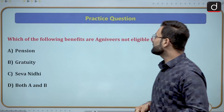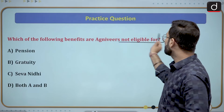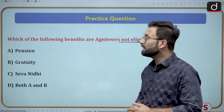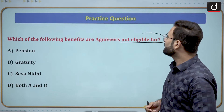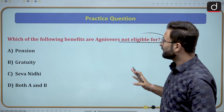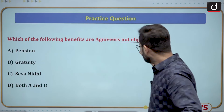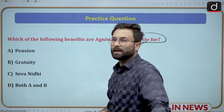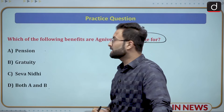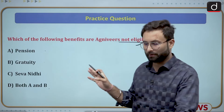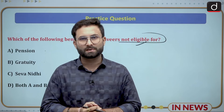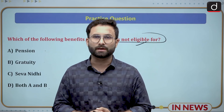Practice question: Which of the following benefits are Agniveers not eligible for? A) Pension, B) Gratuity, C) Seva Nidhi, D) Both A and B. You can reply with the correct option in the comment box. With that, I would like to wrap up the session. If you have not subscribed to the channel, please subscribe. Have a nice day. Thank you.